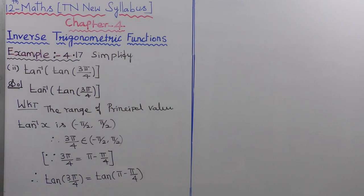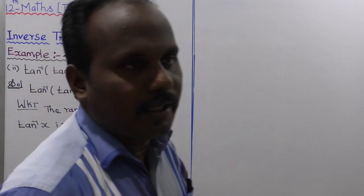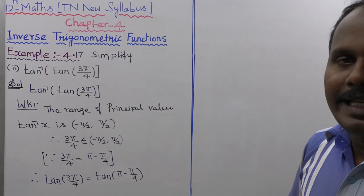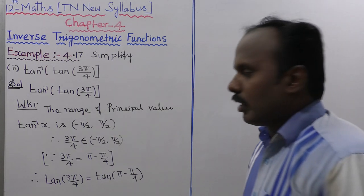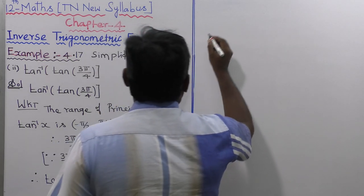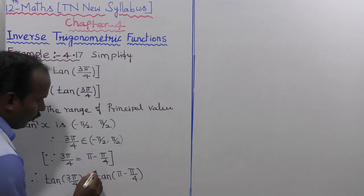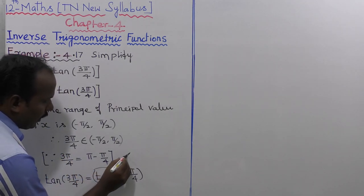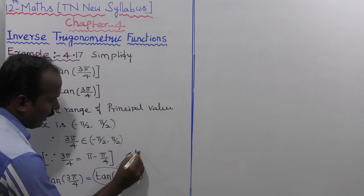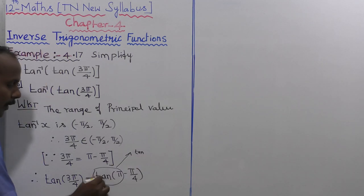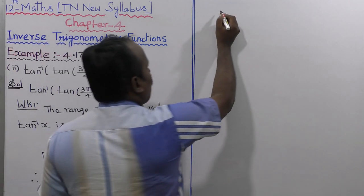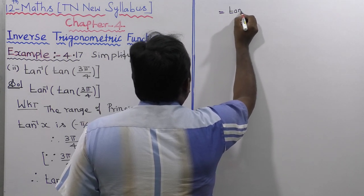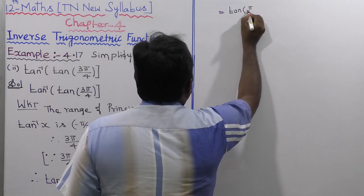Using the identity tan(π minus θ) equals minus tan(θ), tan(π minus π/4) equals minus tan(π/4). So tan(3π/4) equals minus tan(π/4), which gives us minus π/4.